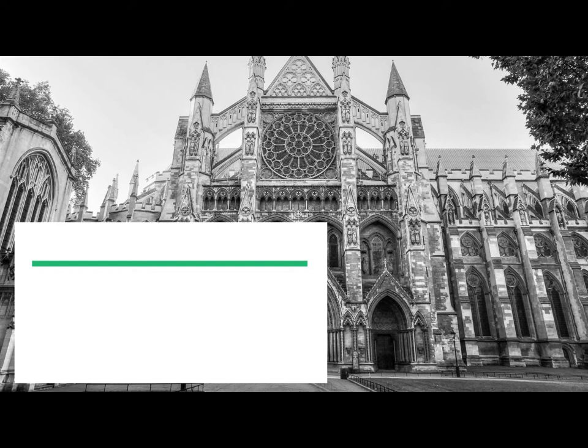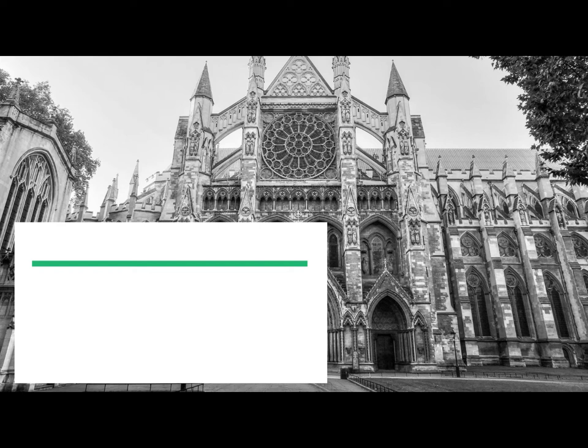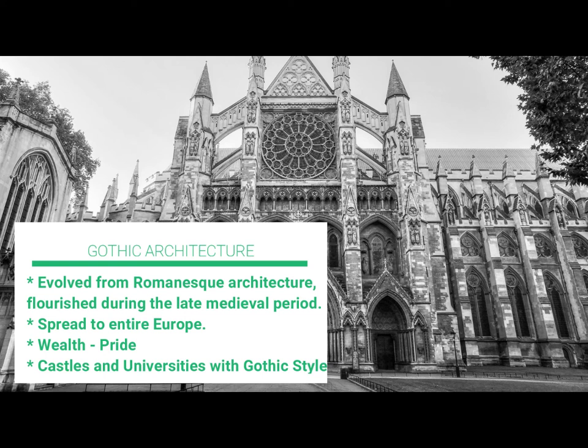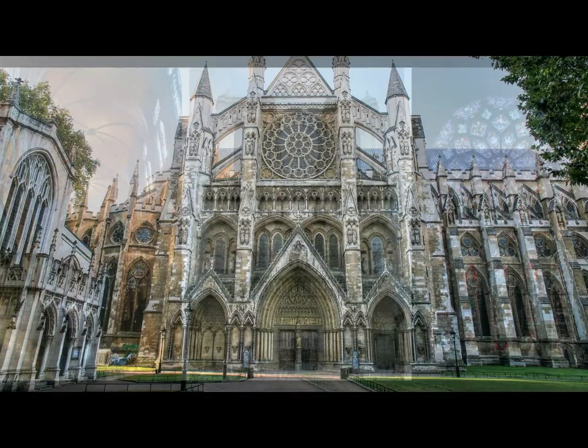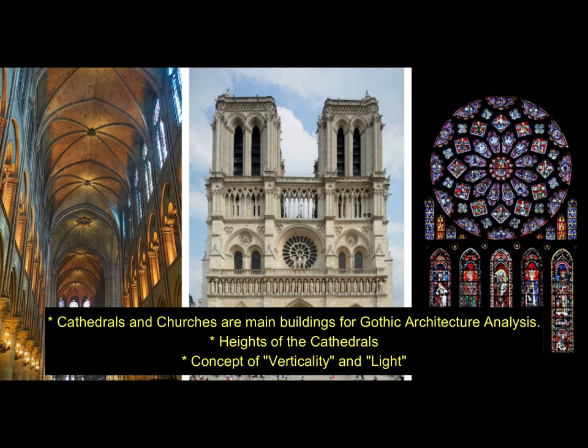Gothic architecture evolved from Romanesque architecture and flourished during the late medieval period. It spread to the entire Europe, especially South and Middle Europe, whose architecture was deeply influenced by this movement. With the flourishing of competition between towns around that era, society had high interest to build religious buildings. Those buildings were important because they represented wealth and pride. Buildings like churches, cathedrals, and abbeys were not only seen as religious architecture — they became the central key of civic lives. Many councils and even universities were built in Gothic style and remain so today. Gothic architecture represented the power of the rulers of that era.